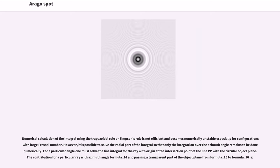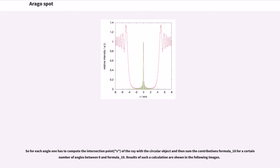For a particular angle, one must solve the line integral for the ray with origin at the intersection point of the line with the circular object plane. So for each angle, one has to compute the intersection point of the ray with the circular object and then sum the contributions for a certain number of angles between 0 and 2π.